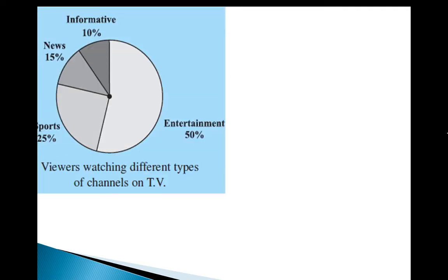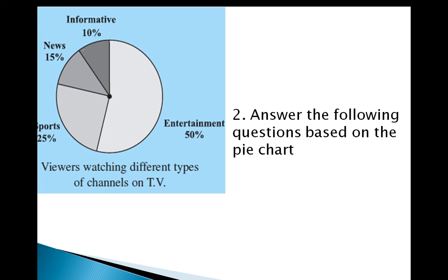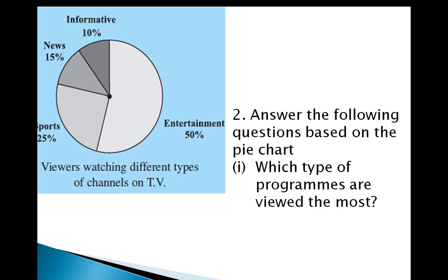This is another pie chart. It shows the viewers watching different types of channels on TV. A little bit more than 50% are watching TV for entertainment, 25% are watching for sports, 15% are watching news, and 10% are watching informatics. Which type of programs are viewed the most? As compared to 10, 15, and 25, the 50 is the greater number — so entertainment programs are viewed the most.